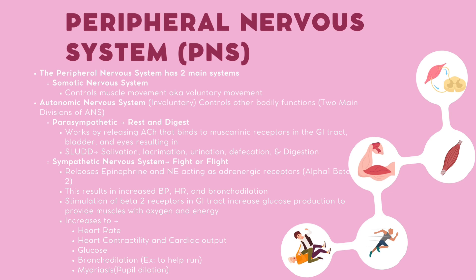The parasympathetic system is the rest-and-digest system. It works by releasing acetylcholine, which binds to muscarinic receptors in the GI tract, bladder, and eyes. This results in SLUD, which stands for salivation, lacrimation, urination, defecation, and digestion.